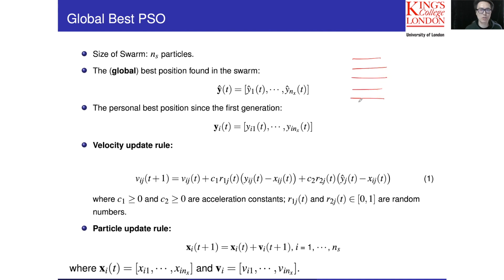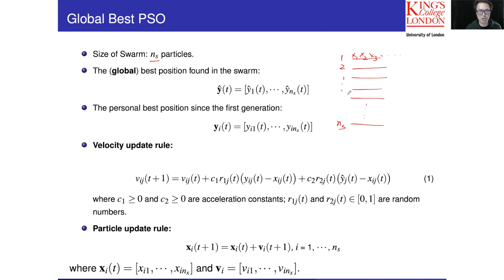We have a group of individuals — each individual we call a particle. Each particle contains a number of decision variables. We use ns to denote the number of particles: one, two, up to ns, which is the size of the swarm or population. Corresponding to each particle, we have a cost function. Since we do minimization, we minimize this cost over variables x1, x2, up to x_nx.